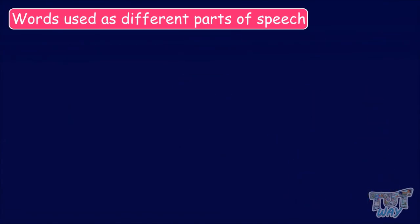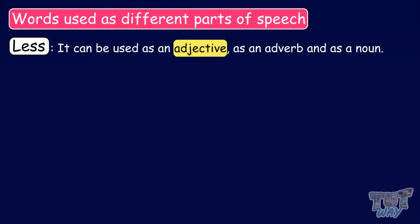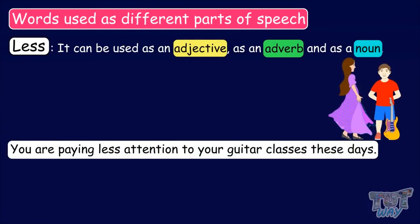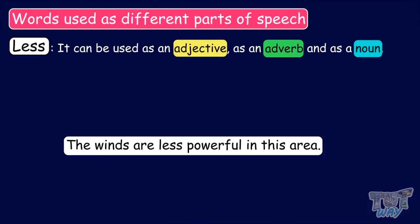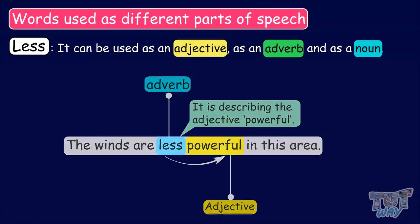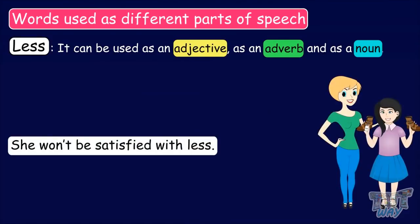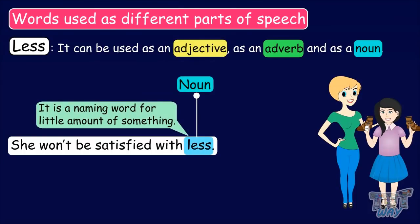Let's learn about our next word, which is 'less'. It can be used as an adjective, as an adverb, and as a noun. You are paying less attention to your guitar classes these days. Here, the word less is an adjective, as it is describing the noun attention. The winds are less powerful in this area. Here, the word less is an adverb, as it is describing the adjective powerful. She won't be satisfied with less. Here, the word less is a noun, as it is a naming word for a little amount of something. So, the word less is used as an adjective, an adverb, and a noun.